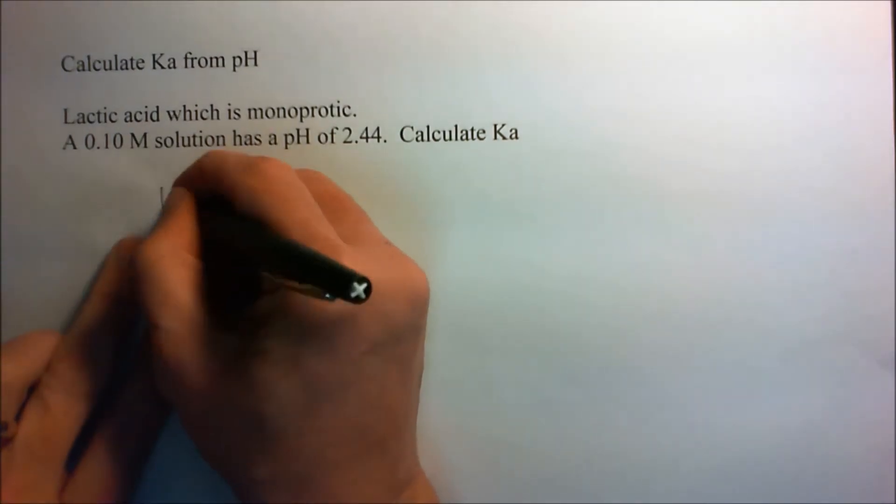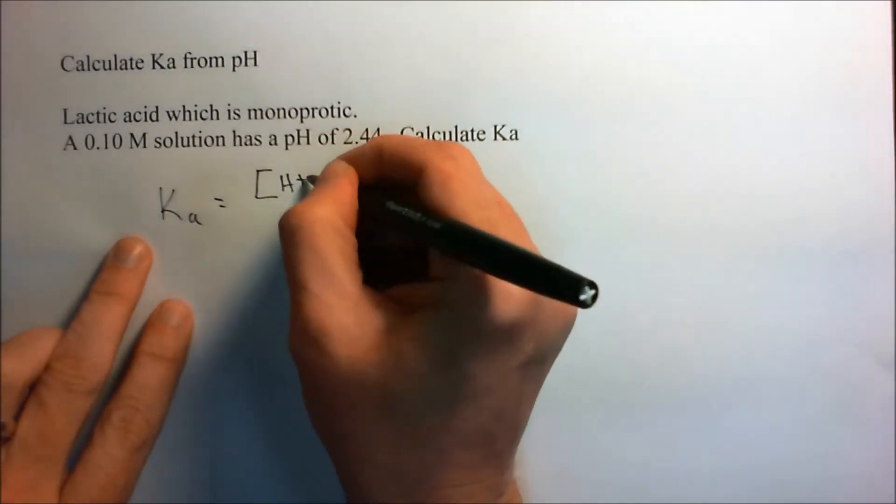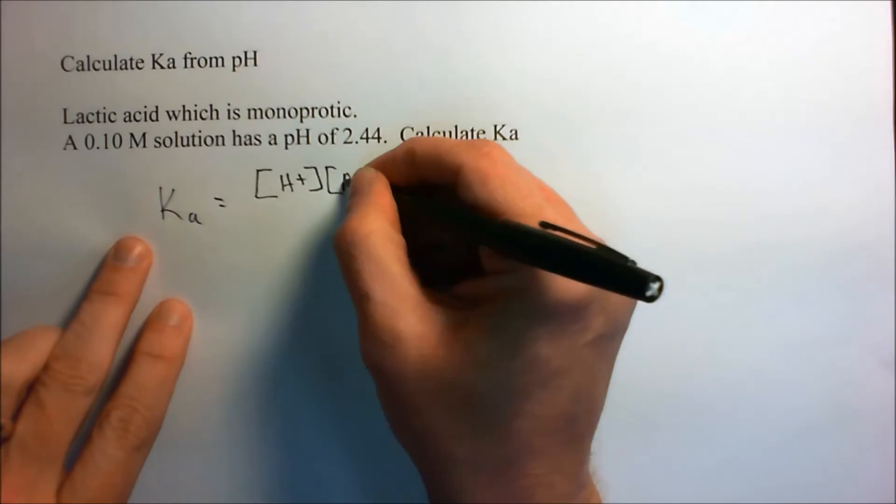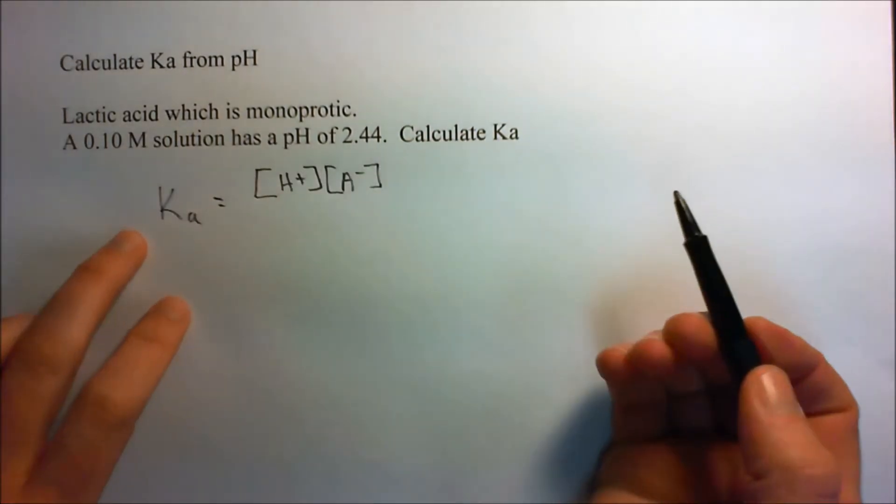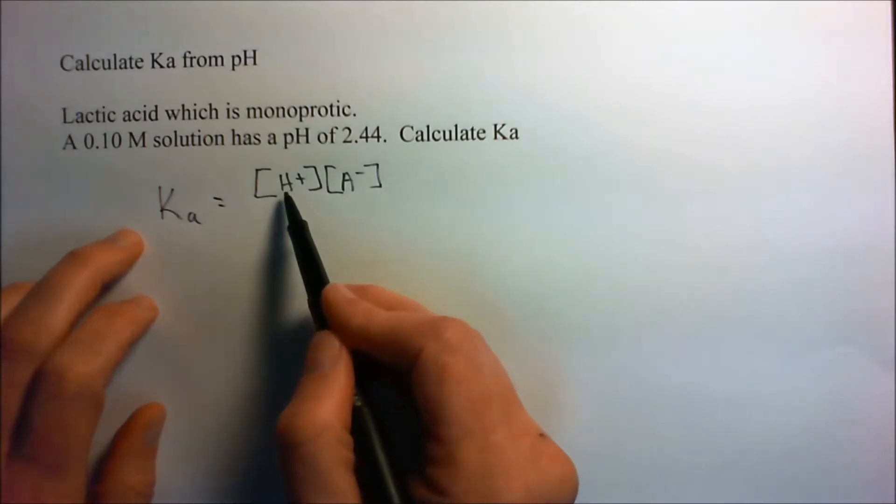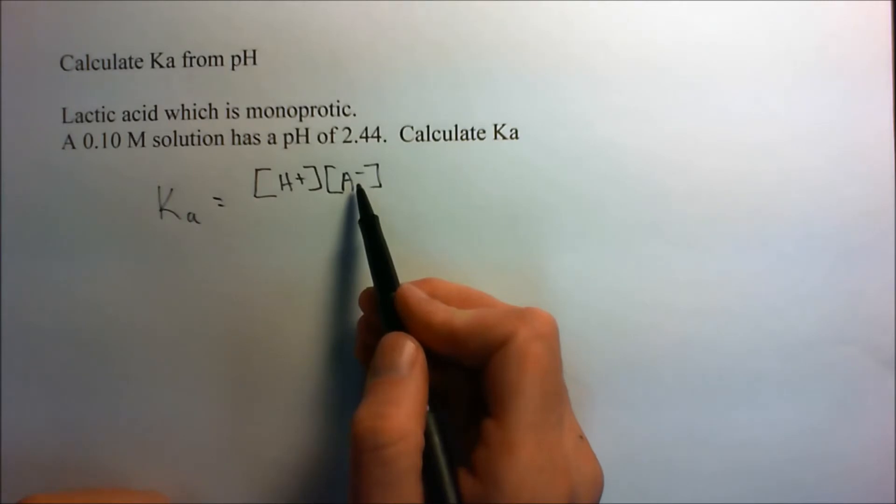Now, recall that the Ka is equal to the hydrogen ion concentration times the concentration of the conjugate base. And it doesn't really matter whether it's lactic acid or any other weak acid. They're going to have a hydrogen concentration and a concentration for the conjugate base.